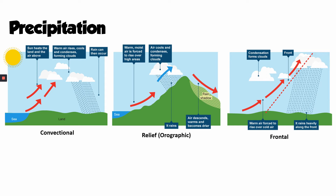With relief rainfall — or orographic rainfall — the air is forced to rise over hilly or mountainous areas. Imagine wind blowing in off the sea, bringing lots of moisture. As that air hits the mountain, it's forced upwards. It's colder at the top of a mountain than at the bottom — that's why mountains sometimes have snow on top. The air that was warm at sea level becomes cold near the summit, the cooling air condenses, forming clouds and rainfall.